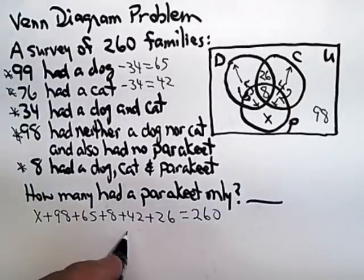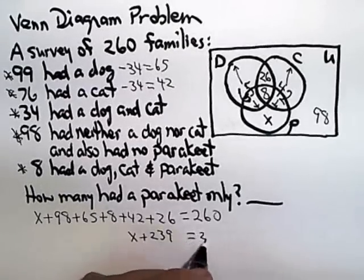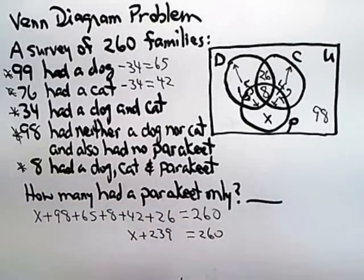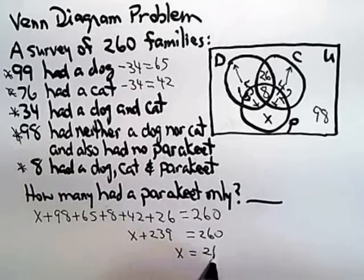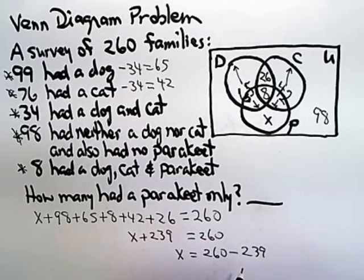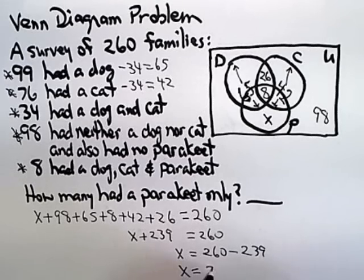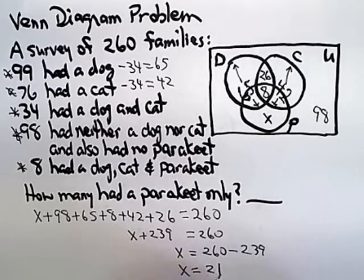So, all those numbers add up to 239. So, I know that X plus 239 is equal to 260, so that means X is equal to 260 minus 239. And that gives me, my arithmetic is not failing me, 21.